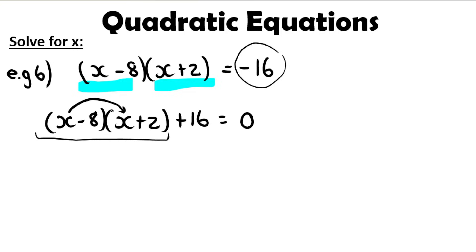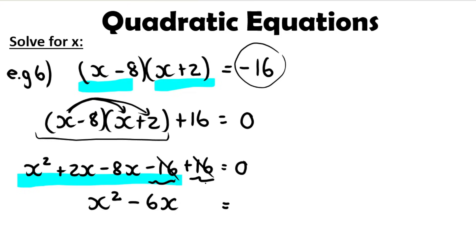So we apply the FOIL method over here. And when we apply the FOIL method, we get this over here. We carry the plus 16 down. Then we do like terms. The negative 16 plus 16 gives me zero. So they cancel, essentially. Those two cancel each other out. Equals zero. And then I can factorize. So I take out an x. You're left with x minus six equals zero. So x can be zero or x can be positive six.